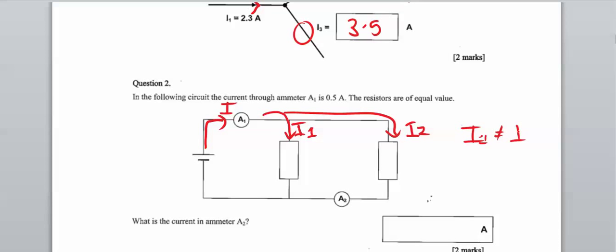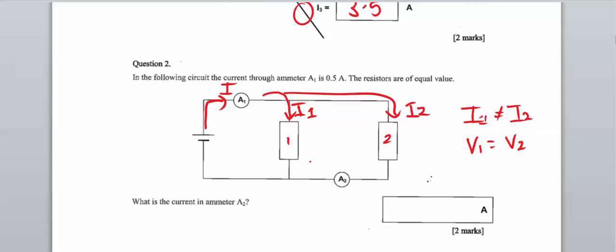The only time when the current through branch 1 and branch 2 is going to be the same is when they have the same resistance. With voltage, though, V1 does equal V2 because it's a parallel arrangement. So voltage across each branch in a parallel circuit is the same, but the current is not.